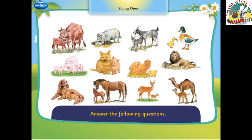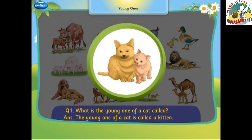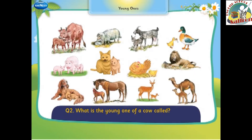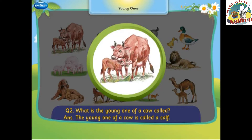Answer the following questions. What is the young one of a cat called? The young one of a cat is called a kitten. What is the young one of a cow called? The young one of a cow is called a calf.